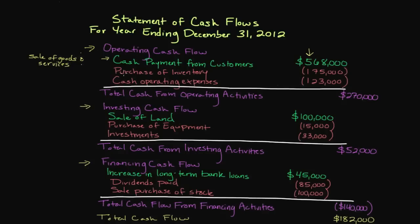Inventory is what we have to acquire to sell to customers so we can generate revenue. Purchasing inventory is a cash outflow — money we pay to obtain product to later sell — and we have $175,000 being spent to acquire inventory. Anything in parentheses reflects a negative number, meaning an outflow, while numbers not in parentheses represent an inflow of cash into the organization.